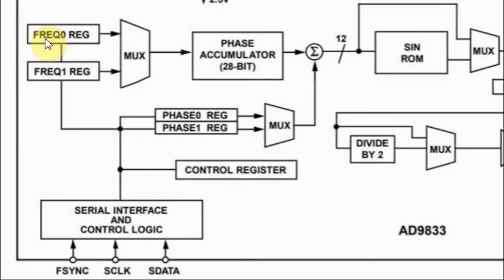We program the frequency register with a 28-bit value to represent a waveform with a certain frequency. The output of the frequency register is fed into the 28-bit phase accumulator, which generates the points needed to cover one cycle of the waveform from 0 to 2 pi.